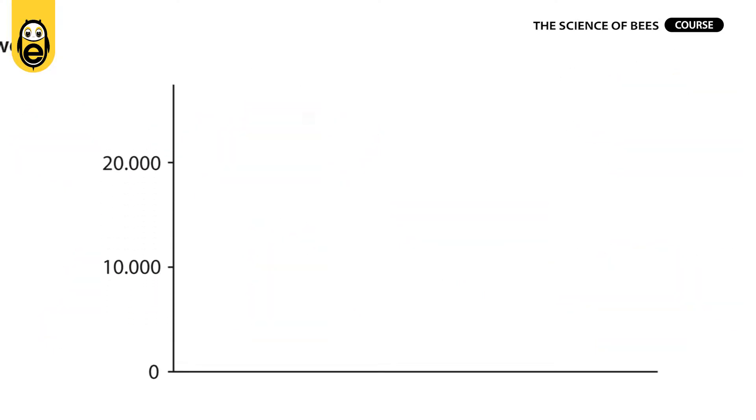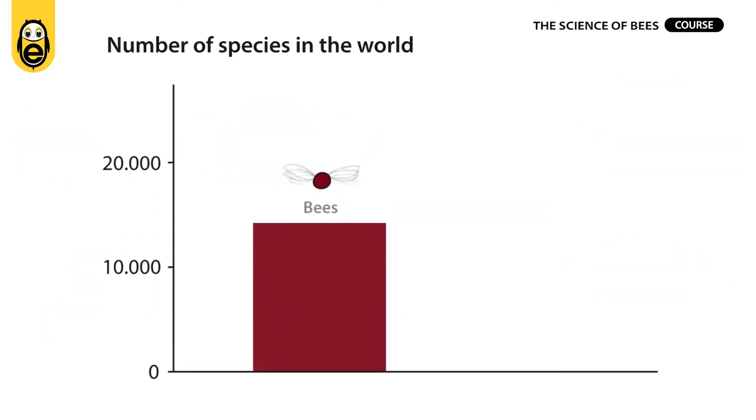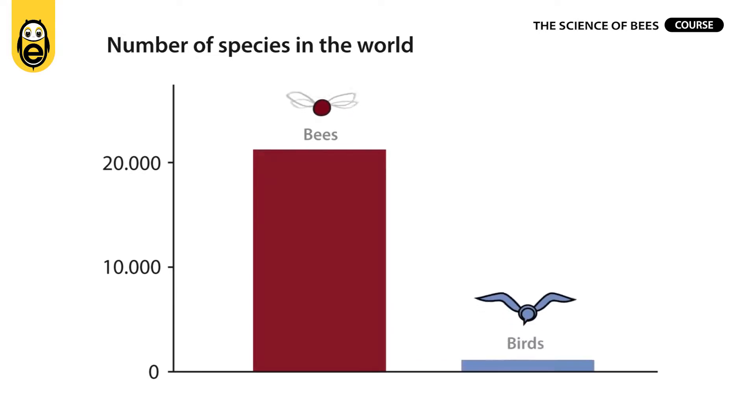There are more than 20,000 different species of bees in the world. For context, there are twice as many bee species as bird species.